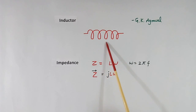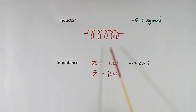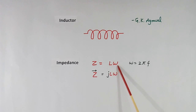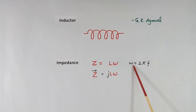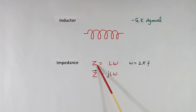This is the inductor symbol. The impedance Z of this inductor is given by L omega, where L is the inductance value and omega is the angular frequency, which is equal to 2 pi F. If the frequency F is more, omega will be more, then Z will be more. This means the inductor impedance will increase if frequency is increasing.